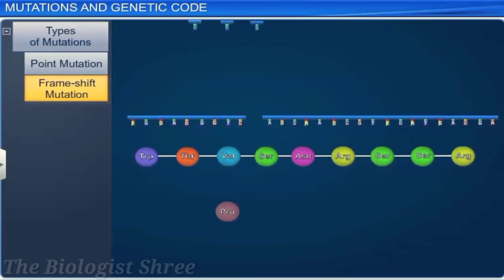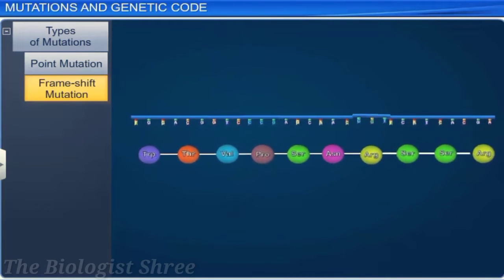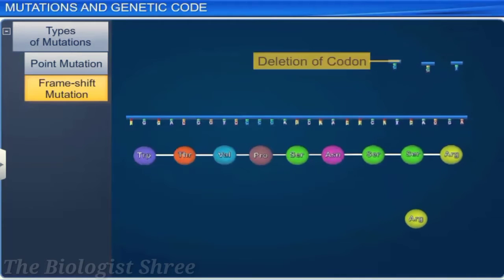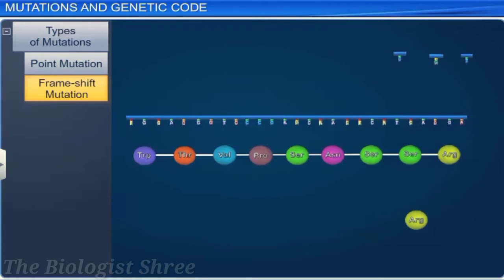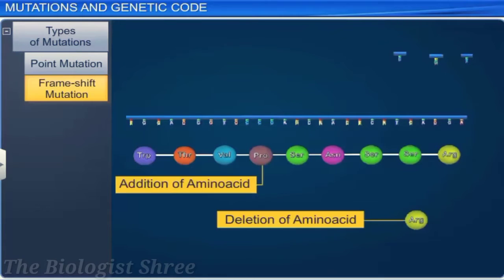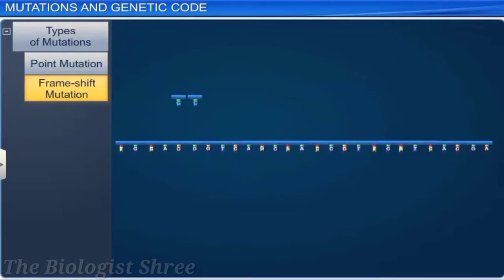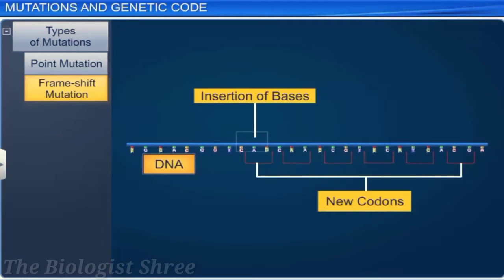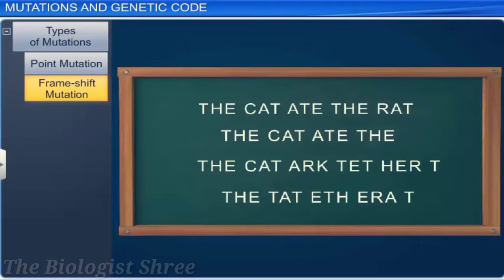Likewise, in a frame shift mutation, if three or multiples of three bases are inserted or deleted, it will result in the deletion or insertion of a codon. This in turn will result in the creation or deletion of an amino acid. Interestingly, frame shift insertion or deletion of one or more bases changes the reading frame only from the point of insertion or deletion.